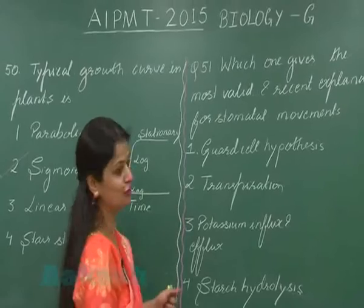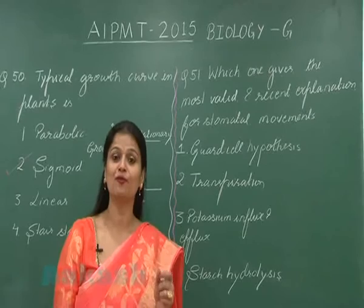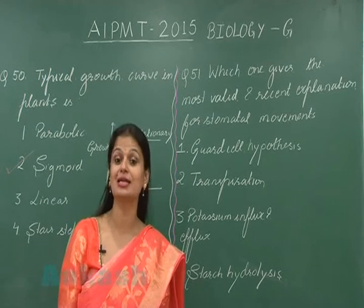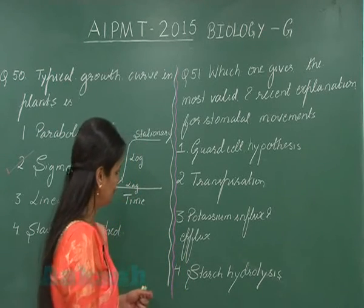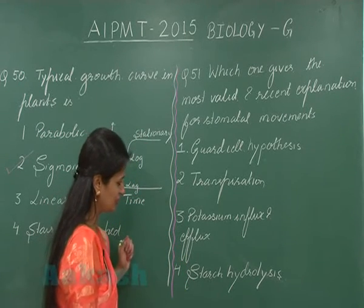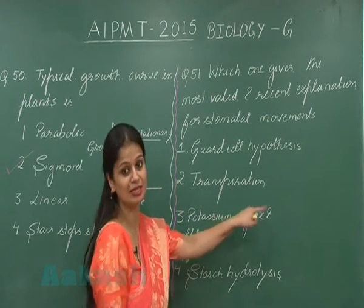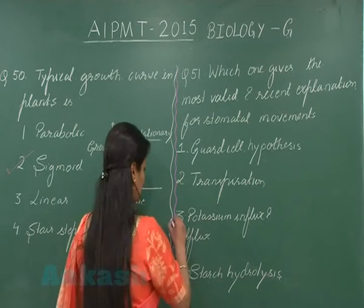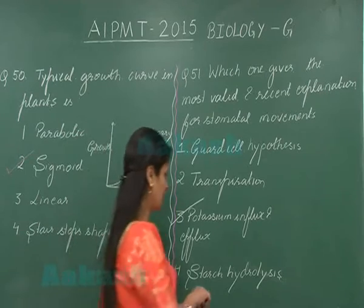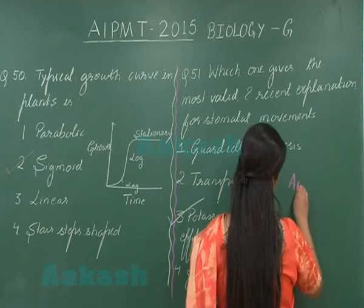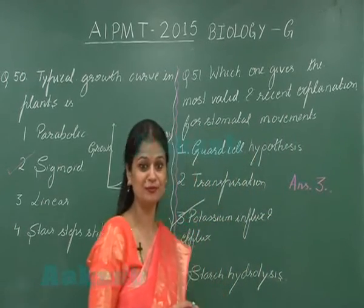Question 51 asks which gives the most valid and recent explanation for stomatal movement. The most accepted theory for stomatal opening is the active potassium ion pump theory. Looking at the options, the third one — potassium influx and efflux — explains stomatal opening and closing. So the right option is option number three.